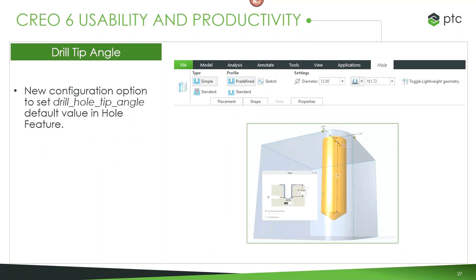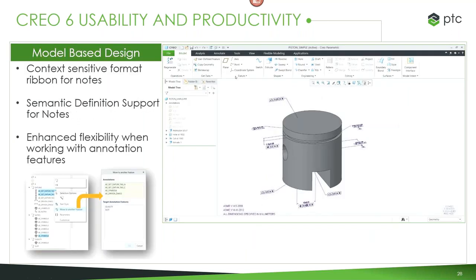There are new options for datum points — you can do a projection onto a vertex, a curve point on a planar surface, or a straight edge align — making it easier to apply these different datum references and keep them in place whenever you update the model. Another small but highly requested change is a configuration option to set the drill hole tip angle, so this feature always defaults to the correct value for you without having to change it every time.